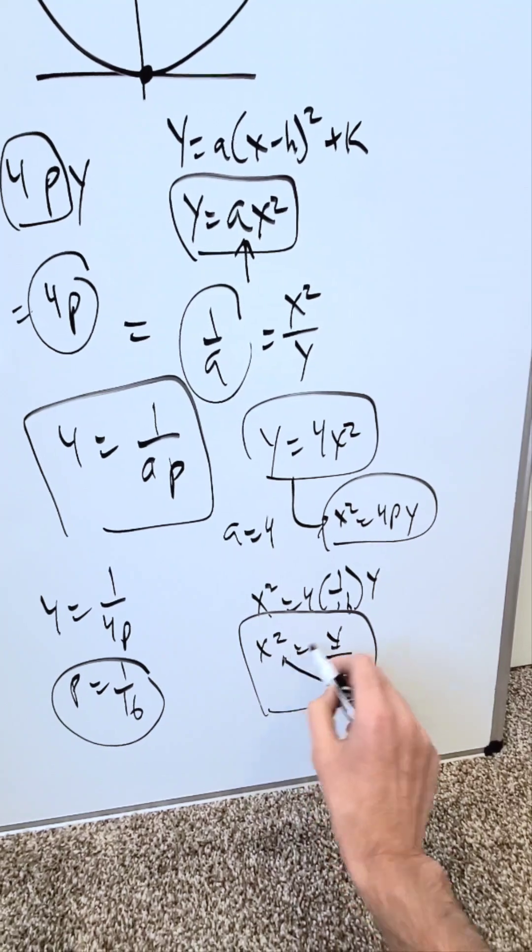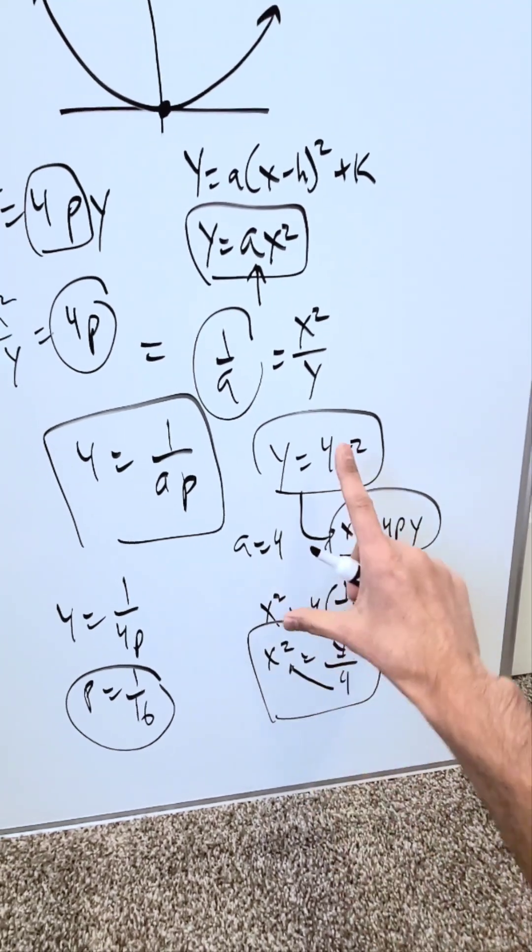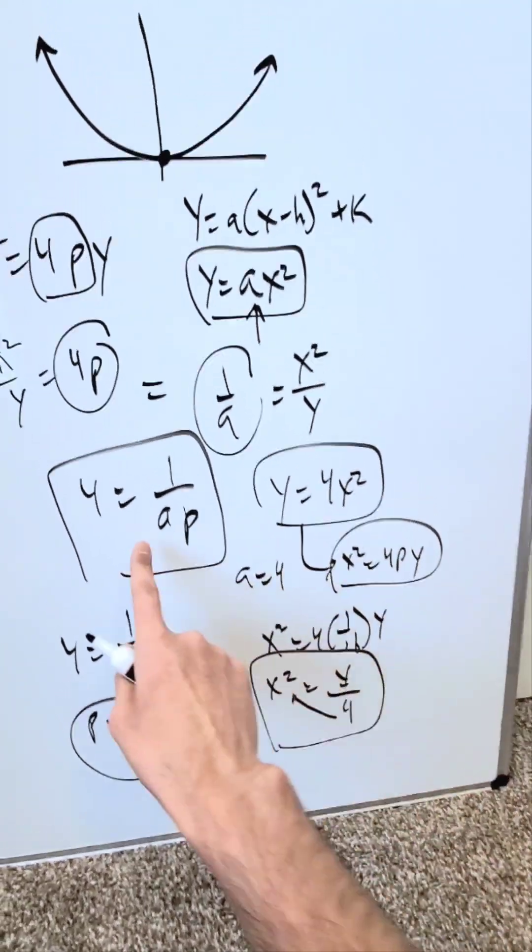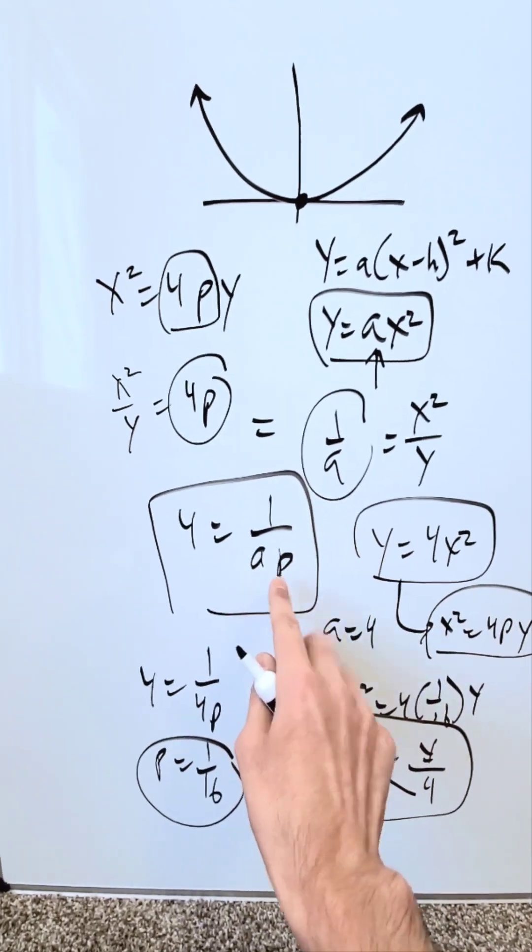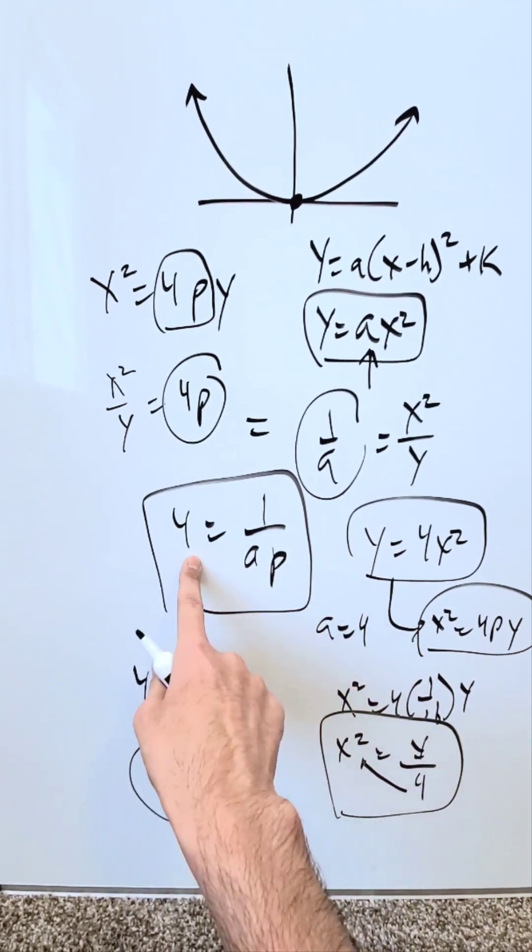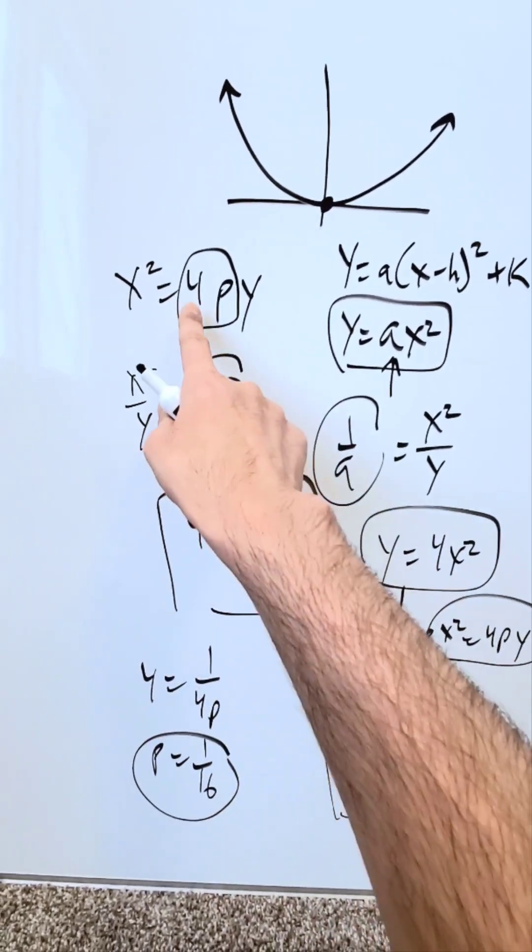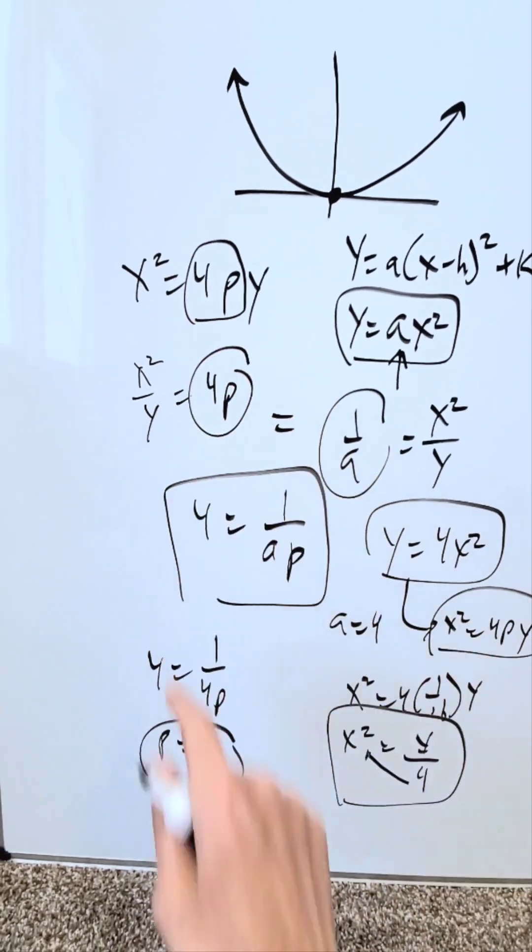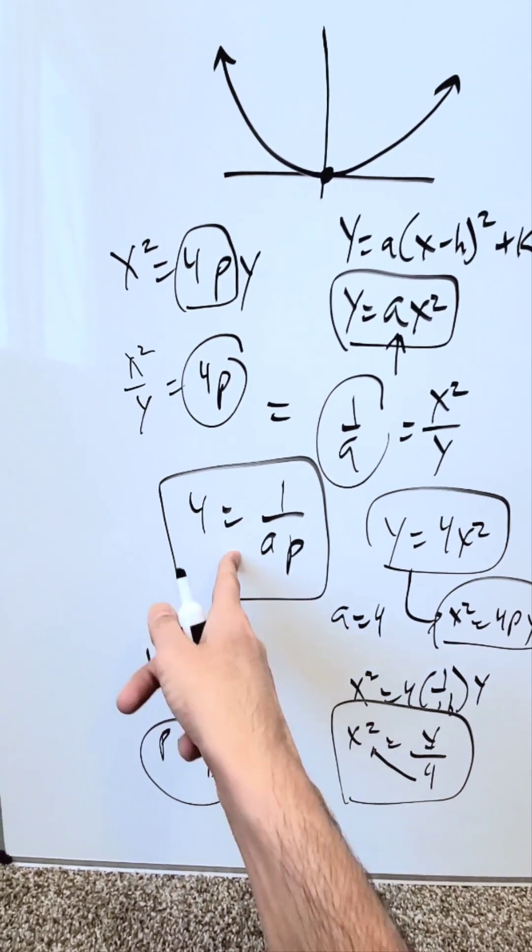If you were to just push the 4 over here, you'll have y equals 4x squared. But you've interrelated both of these forms using this factor. The reciprocal of your a and your p, the product of those two, is always equal to 4, which you end up seeing here in the definition of a parabola. This is a very interesting relationship to know.